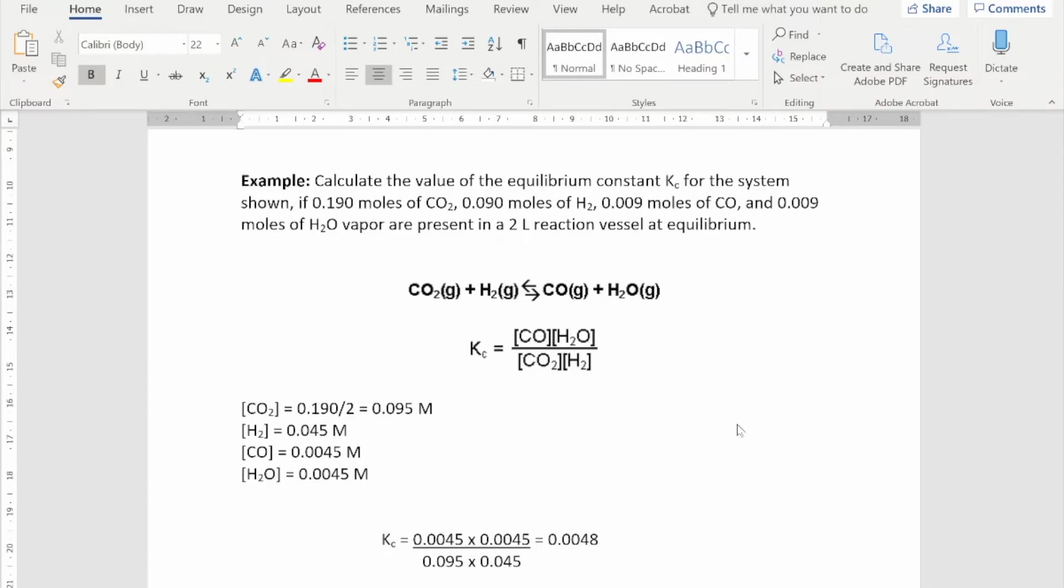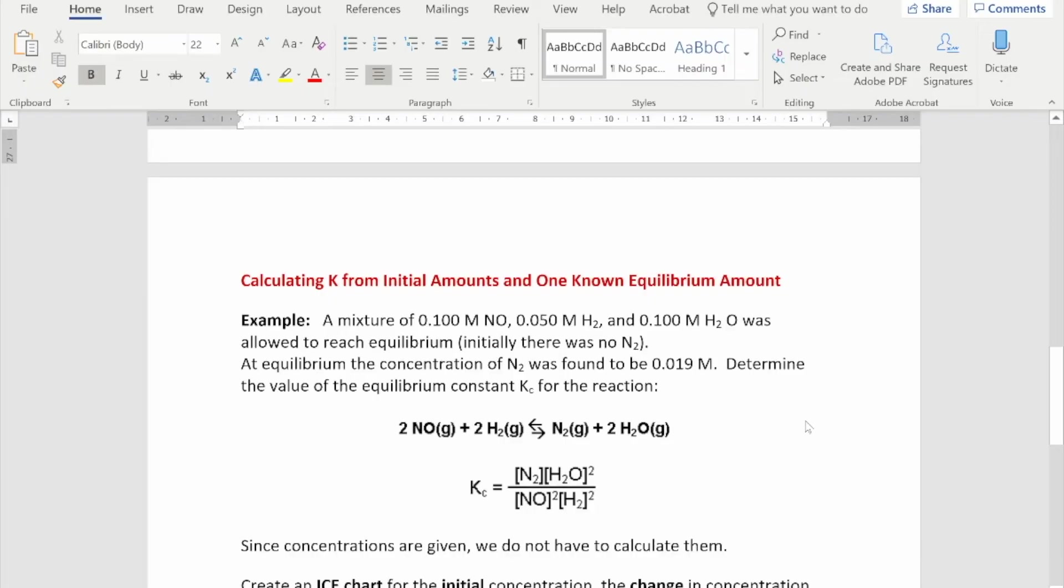The second one I'm going to show you does not give you the equilibrium quantities. I would say these are probably the more likely questions, especially if they're going to be carrying a few more marks. So in this second one, we are given some of the initial amounts and we are given one of the equilibrium quantities. So you'll see in this one, we are mixing NO and hydrogen together. We are already given their concentrations, so we haven't got to worry about changing them from moles into a concentration. So if the NO and the H₂ are given and the H₂O, which is a product, is also given.